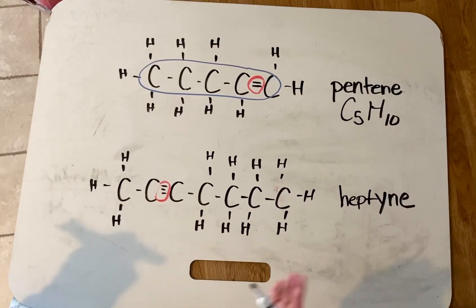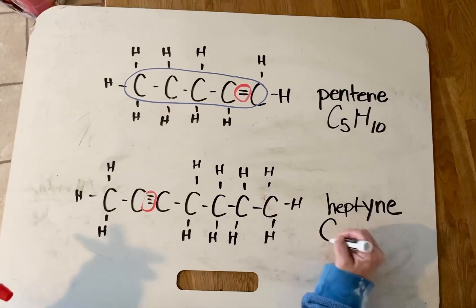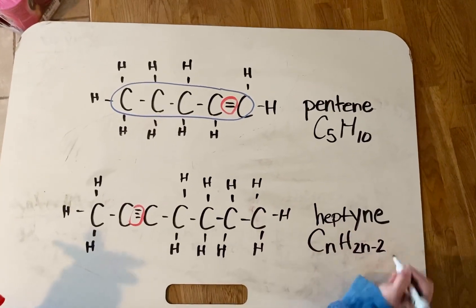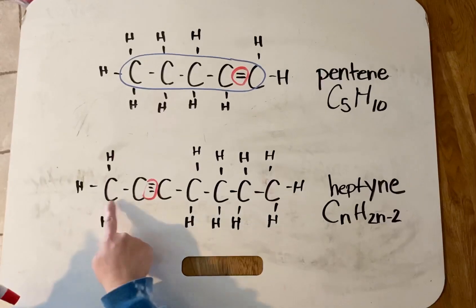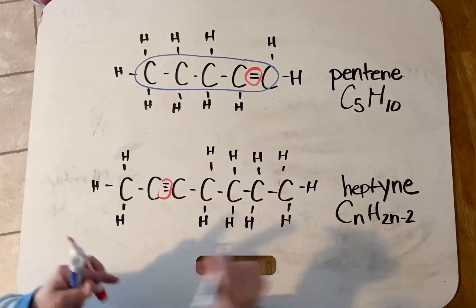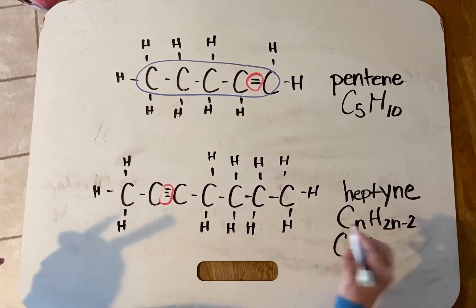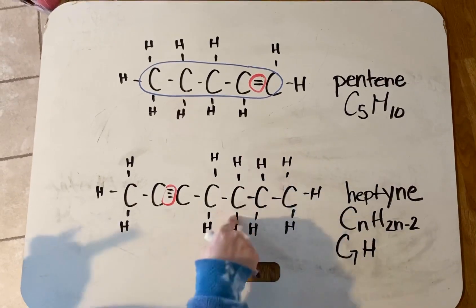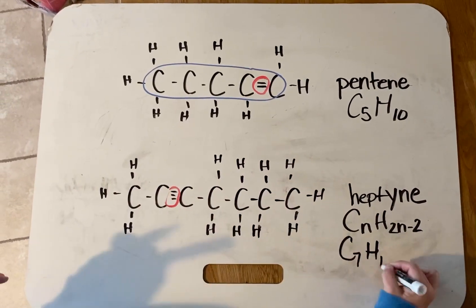If I wanted to check his formula, I could either plug into this formula right from table Q, or I could simply count it: one through seven carbons (C7), and then counting the hydrogens, I get three through twelve. C7H12.